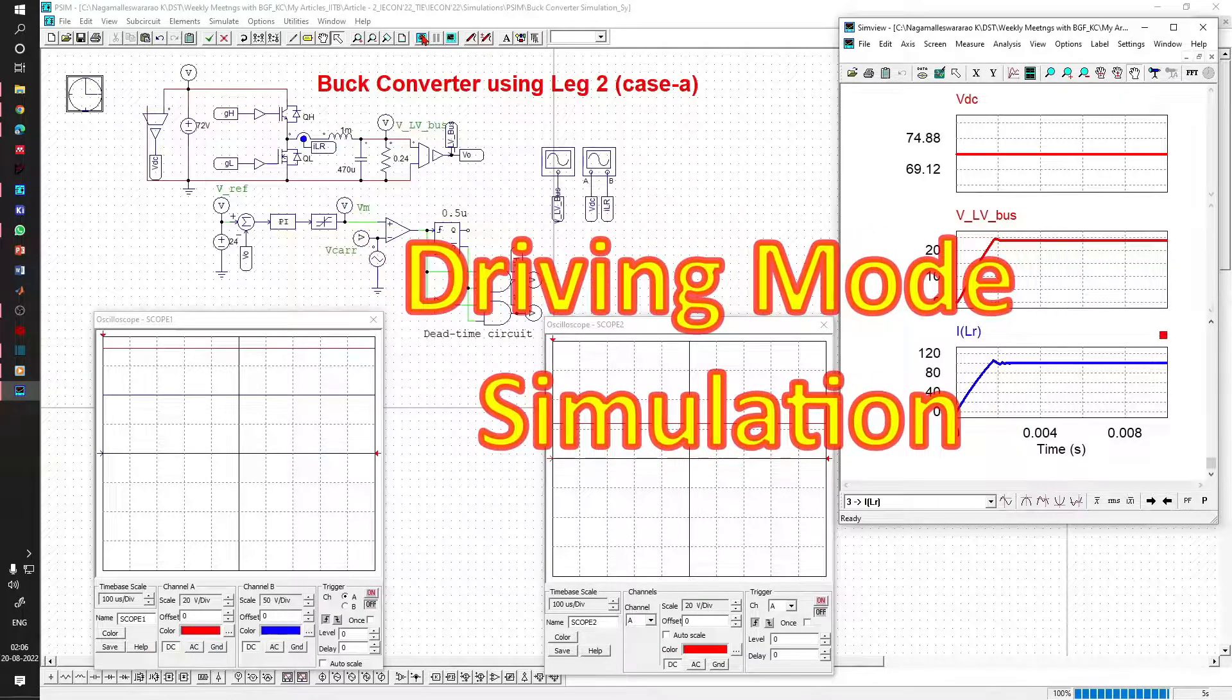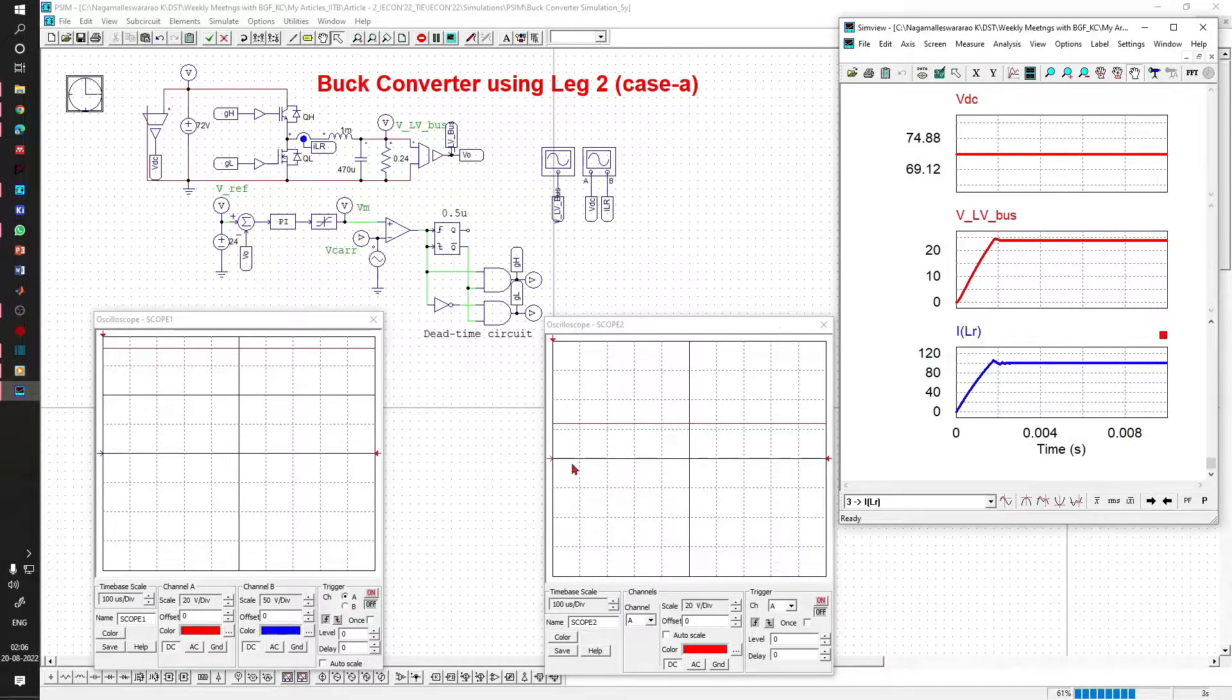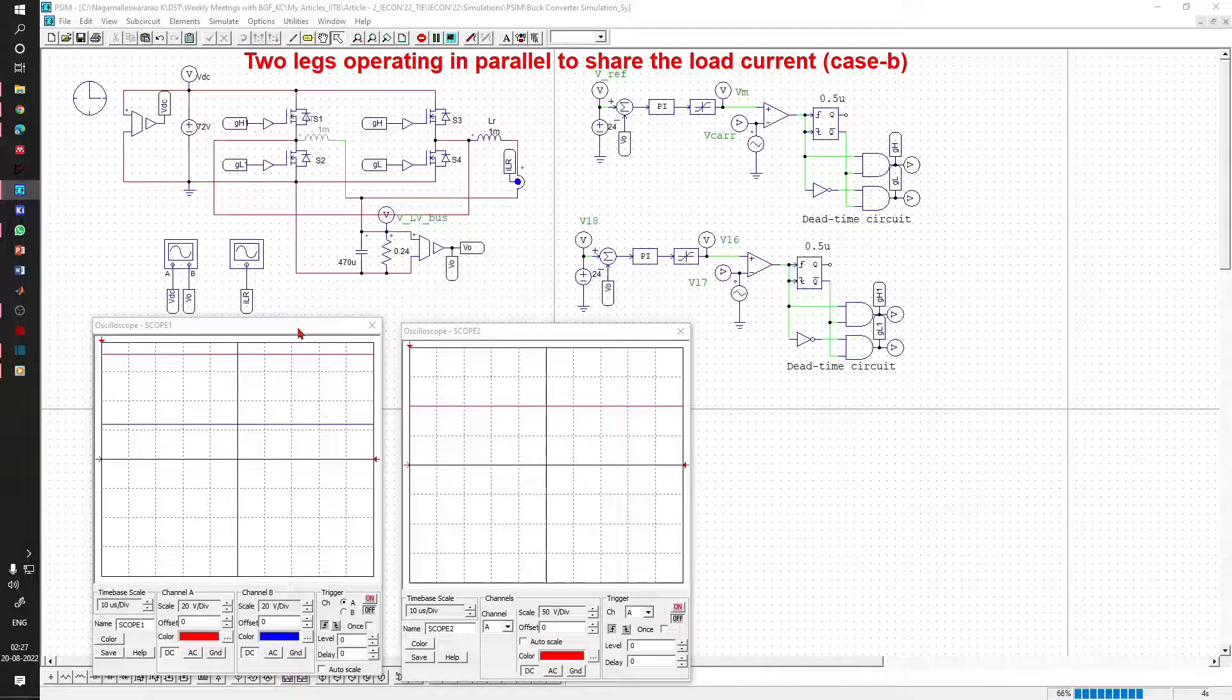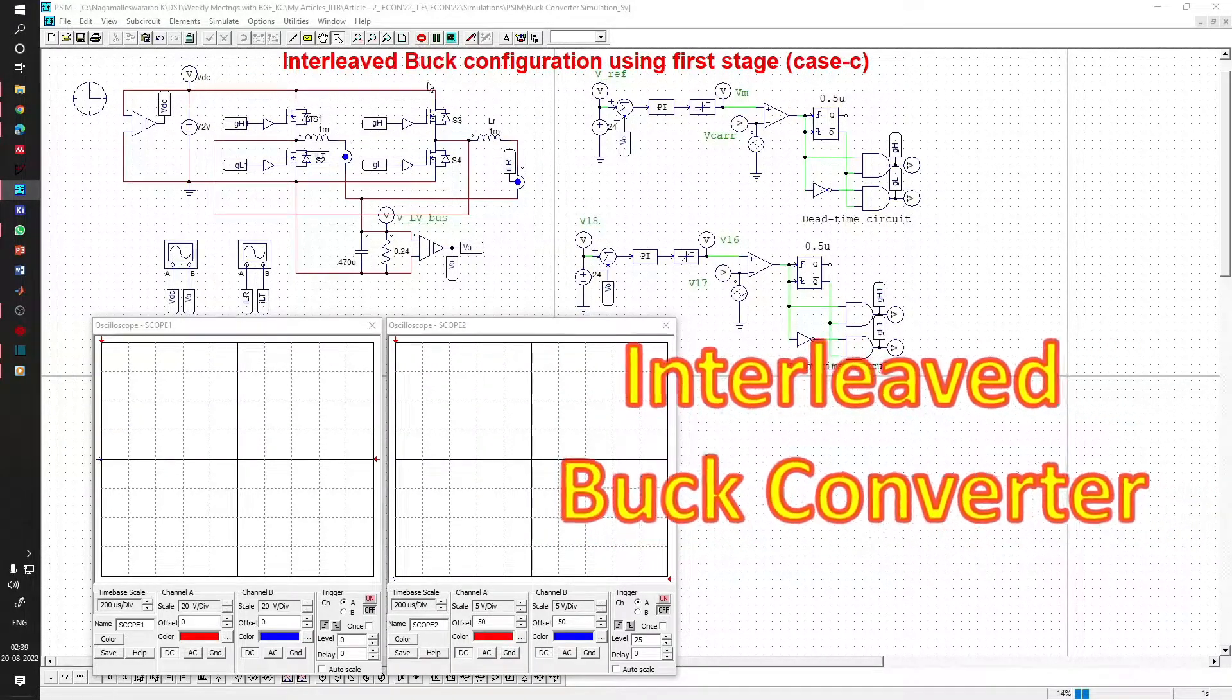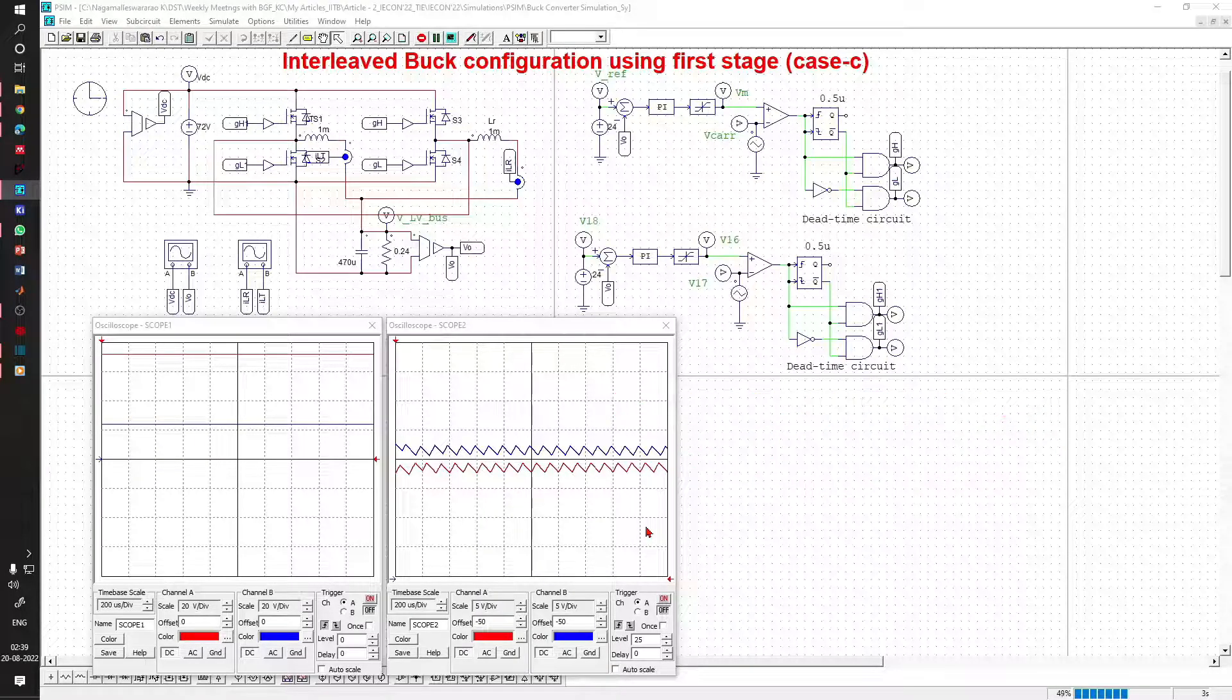Driving mode simulation results. Buck converter using only leg 2 suffers high current stress in switches and inductor and high ripple current at output. When two legs operate in parallel, only switch current stress is reduced. The above problems are solved with interleaved buck converter as shown here.